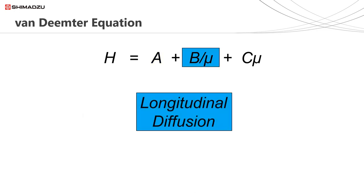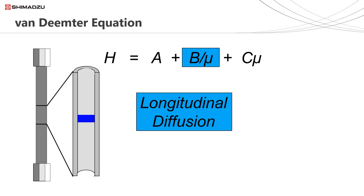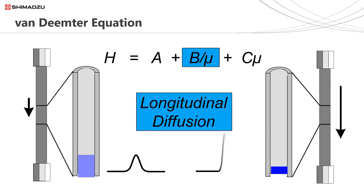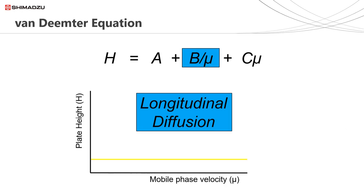The second term, the B term, is called longitudinal diffusion. If we consider a section of this column and a tight band of analyte, if the flow of the mobile phase is slow, the slowly moving band of analyte can spread out due to random molecular diffusion, resulting in a broad analyte band as it exits the column. However, if the flow of the mobile phase is fast, the fast moving band does not get the opportunity to spread out, resulting in a tight band as it exits the column. The contribution to plate height H from longitudinal diffusion is dependent on mobile phase velocity — as the mobile phase velocity increases, the contribution of longitudinal diffusion to plate height becomes negligible.